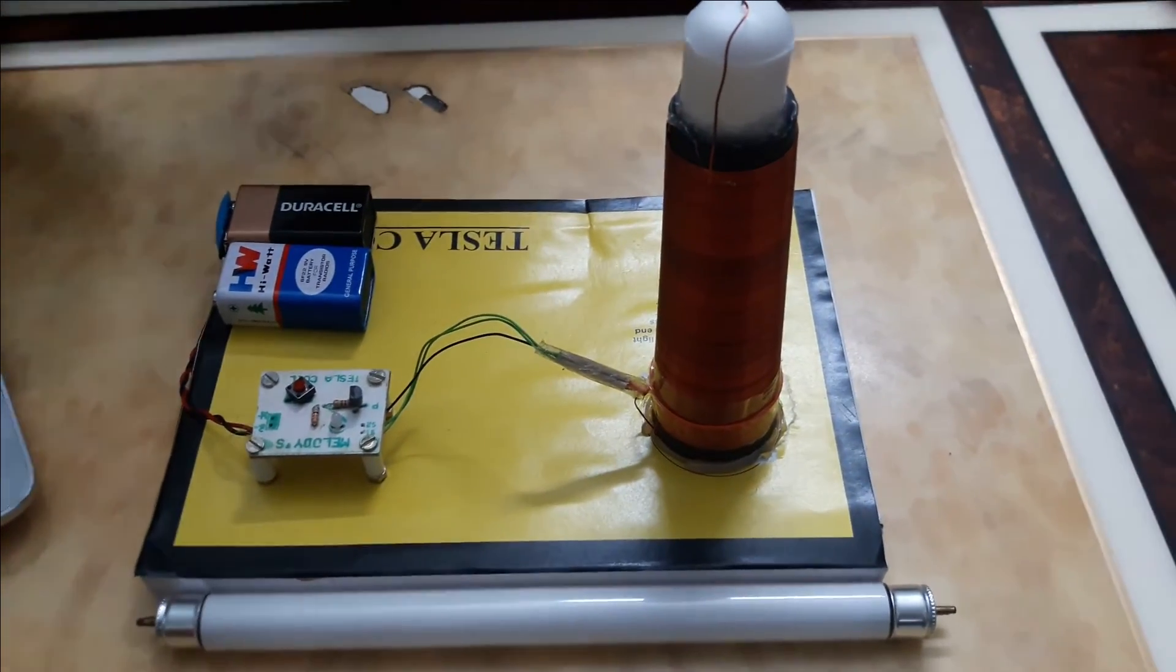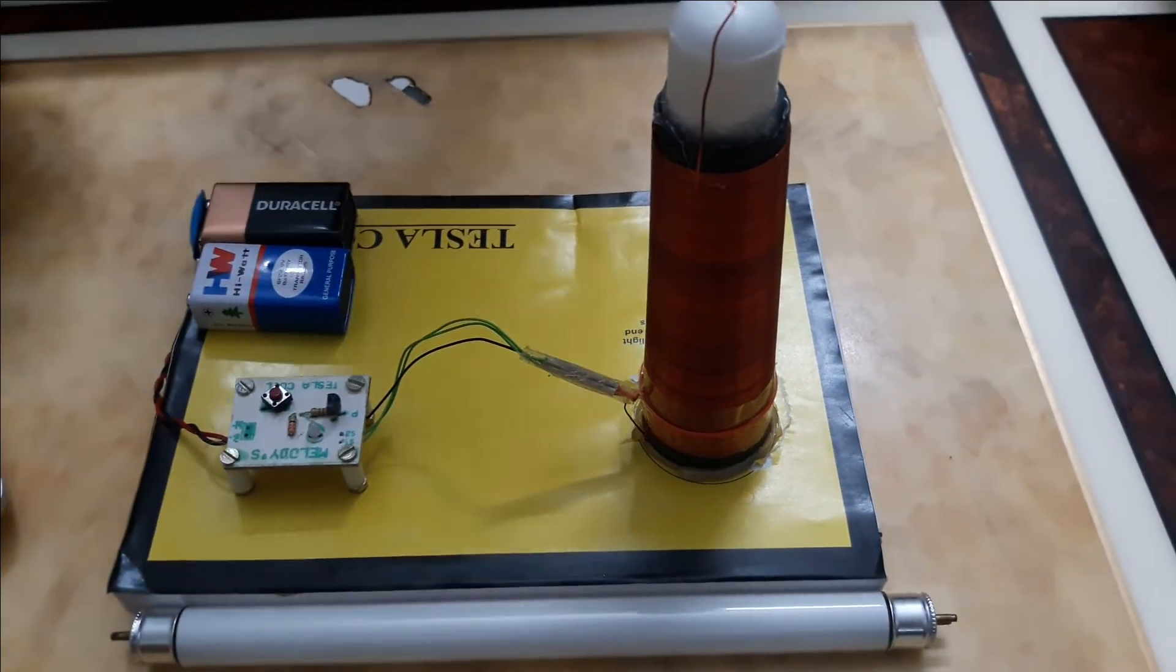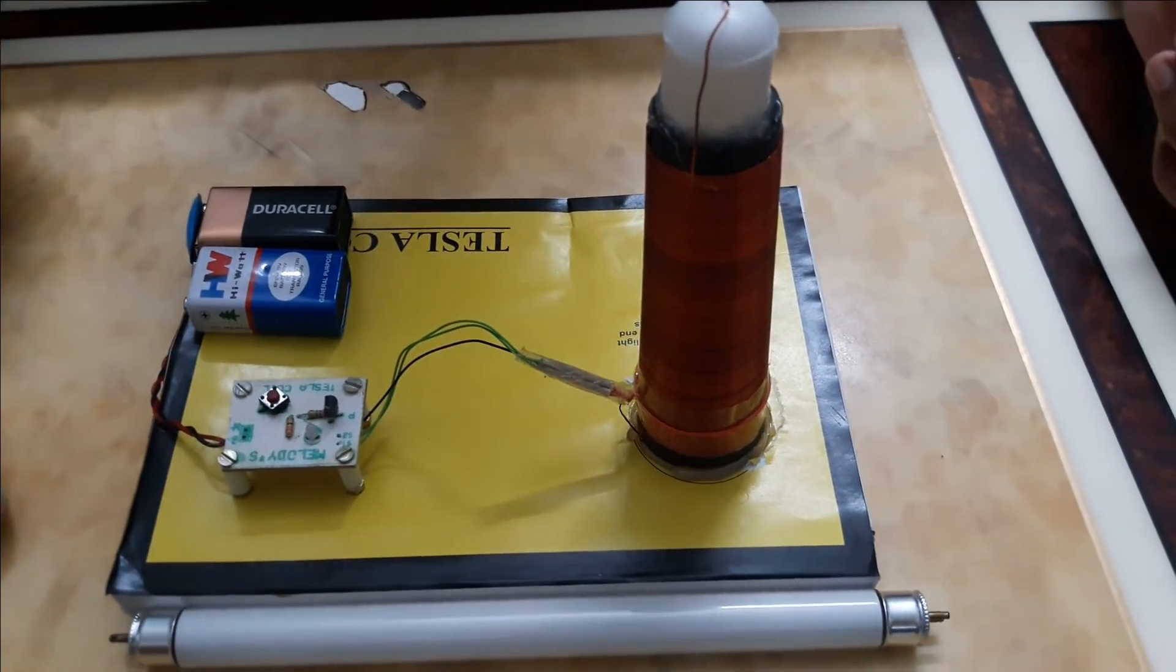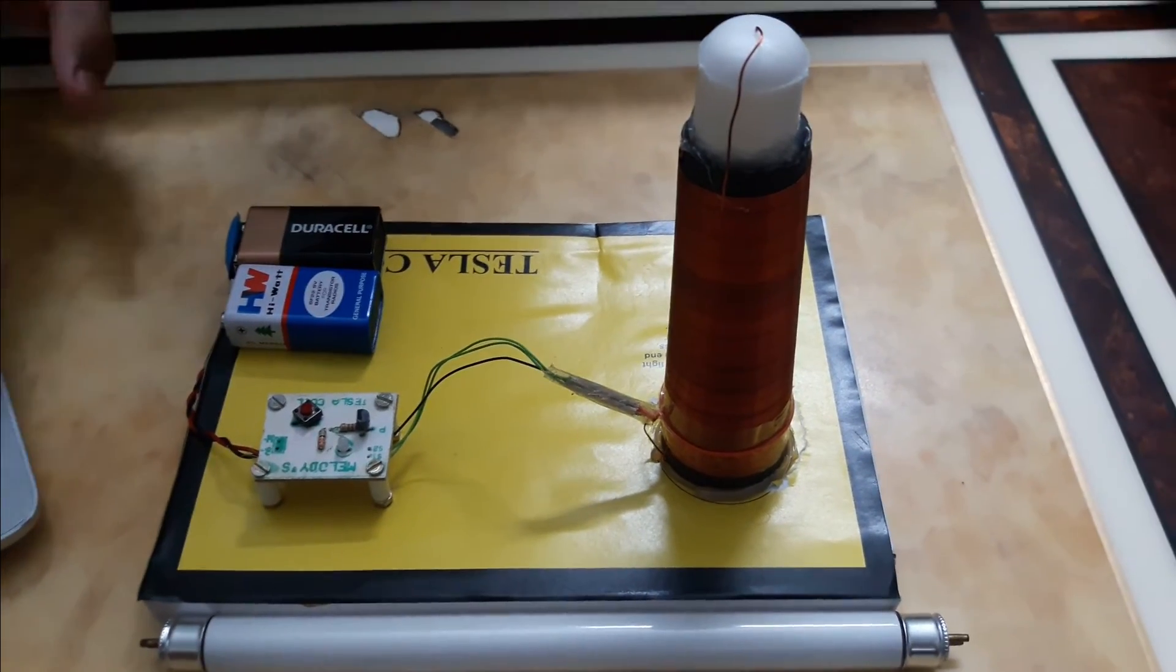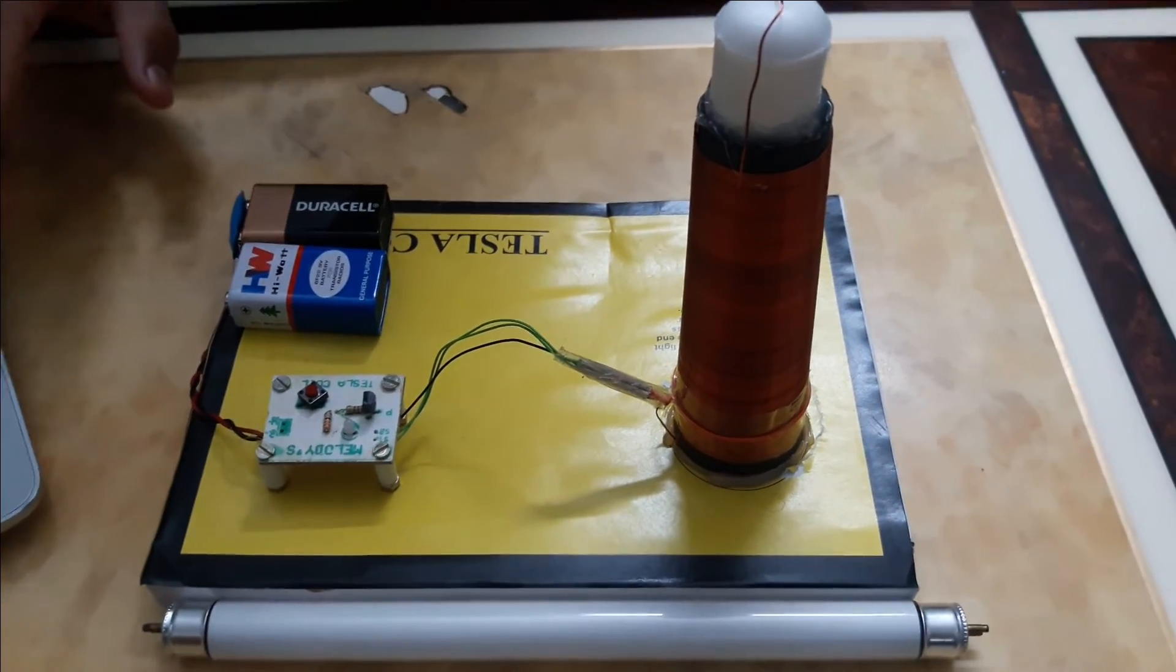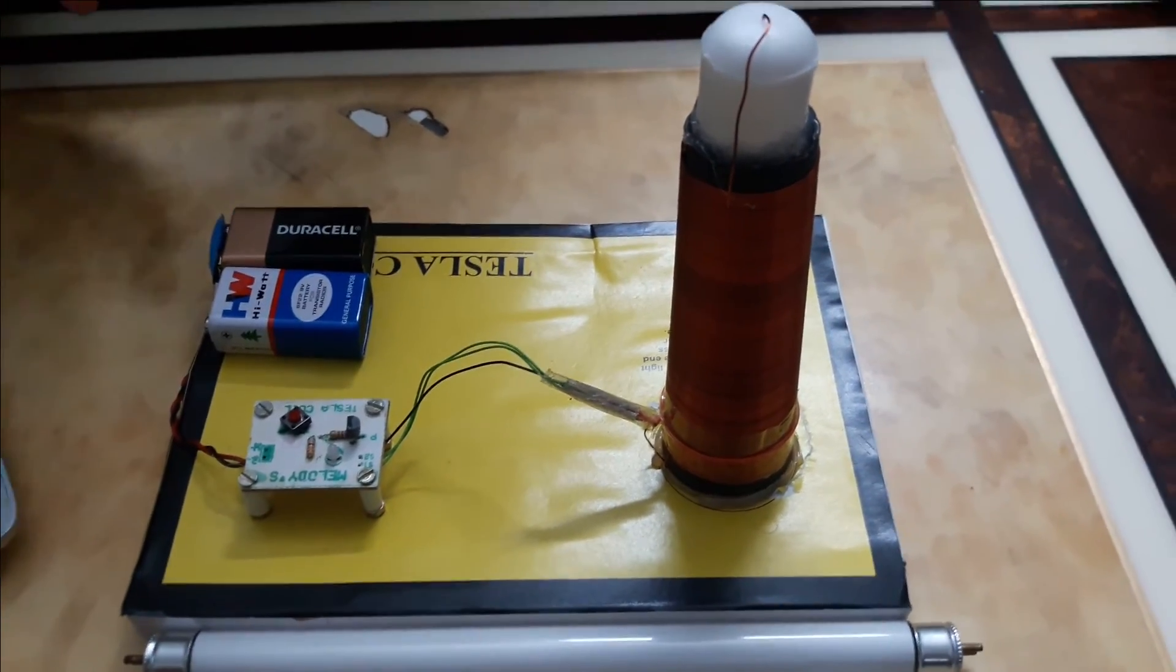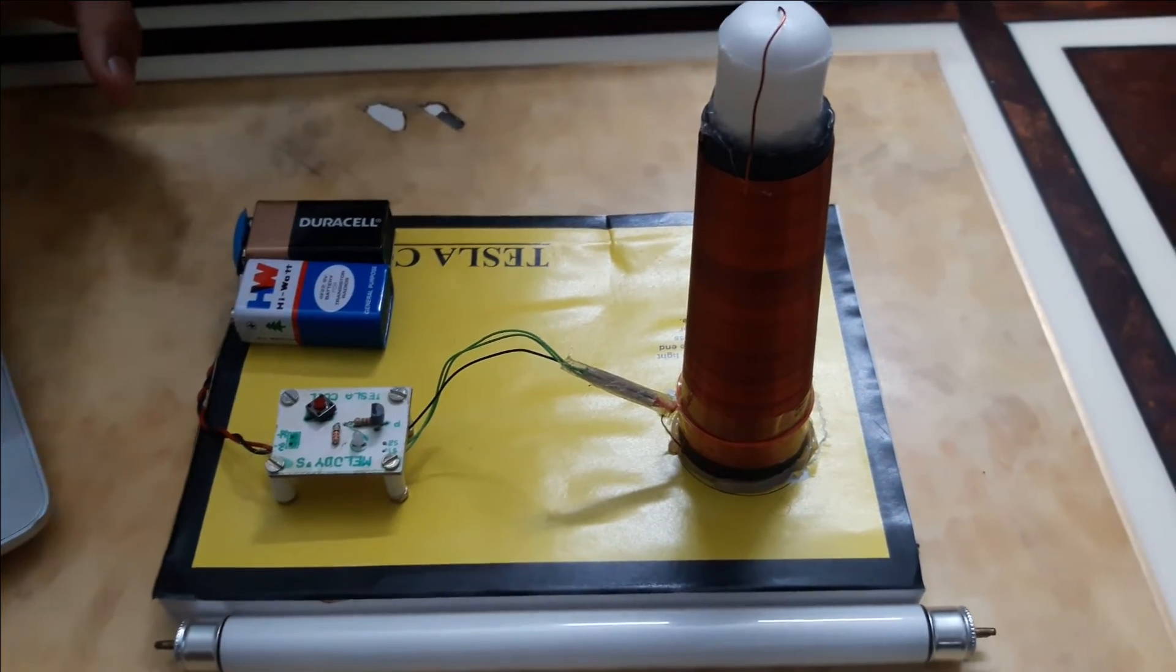A high frequency transistor is used to supply the primary coil, and a 9-volt battery powers the whole setup. The positive end of the battery reaches the collector of transistor through the primary coil, and the emitter is grounded.